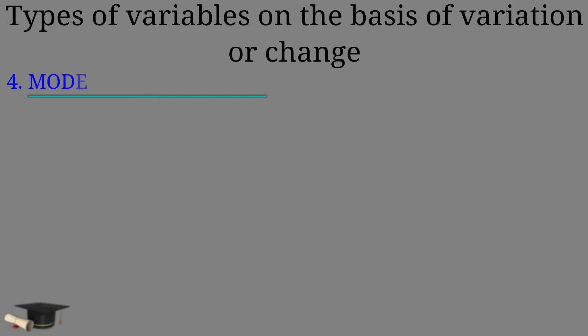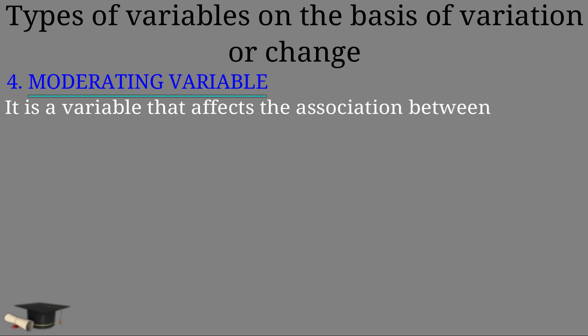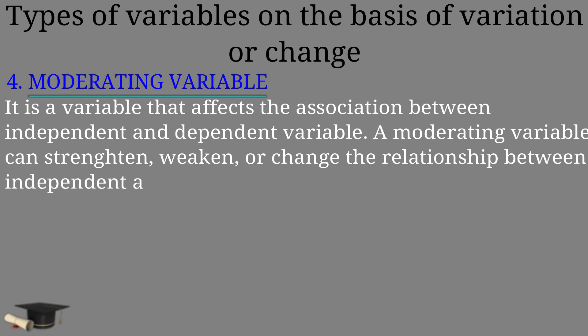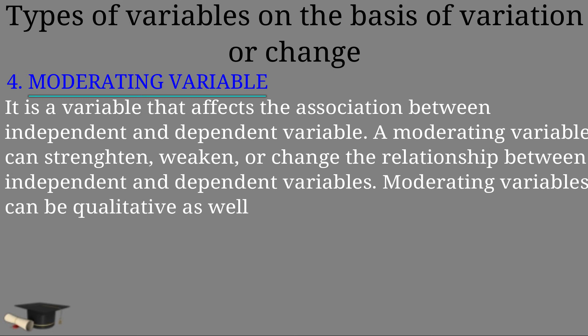Number four, moderating variable. It is a variable that affects the association between independent and dependent variable. A moderating variable can strengthen, weaken or change the relationship between independent and dependent variables. Moderating variable can be qualitative as well as quantitative. For example, race, religion, age, gender, etc.